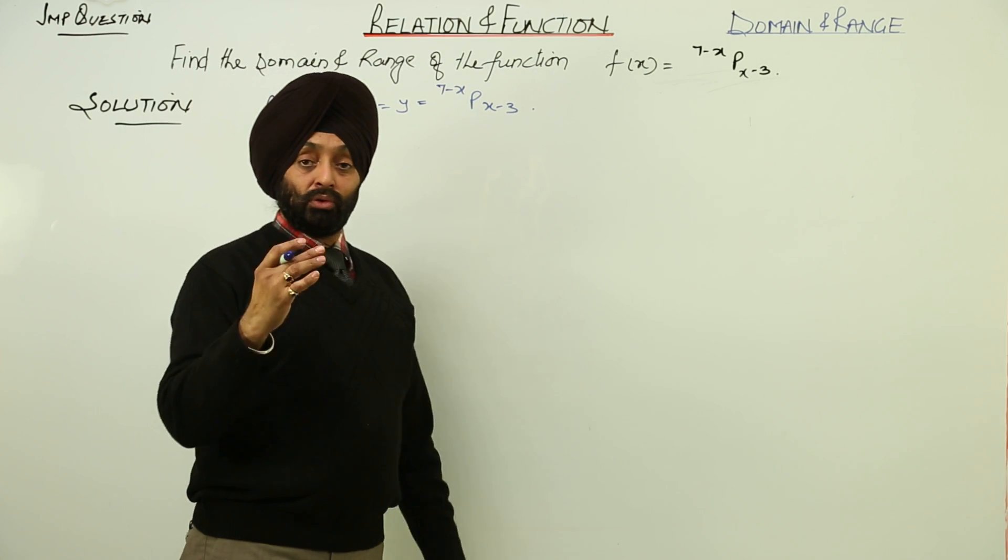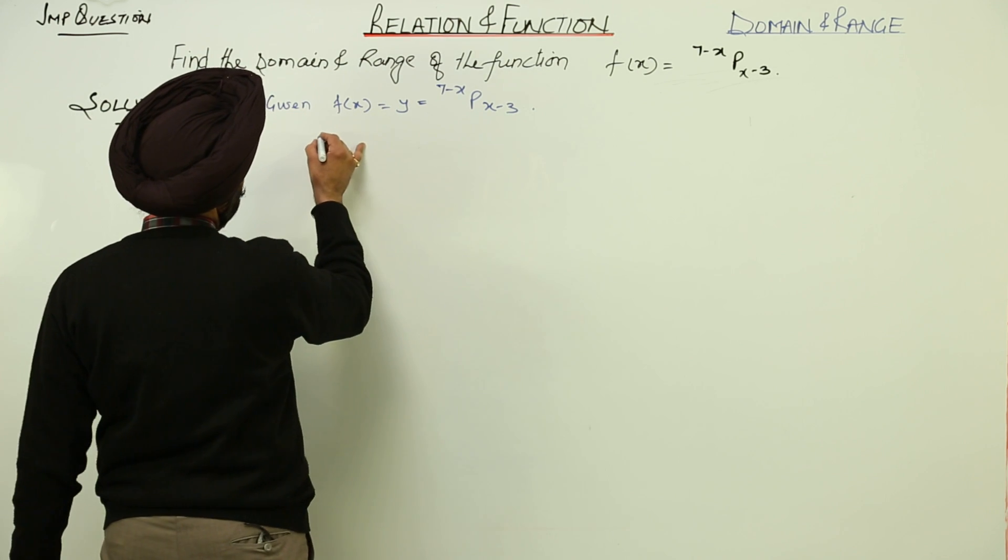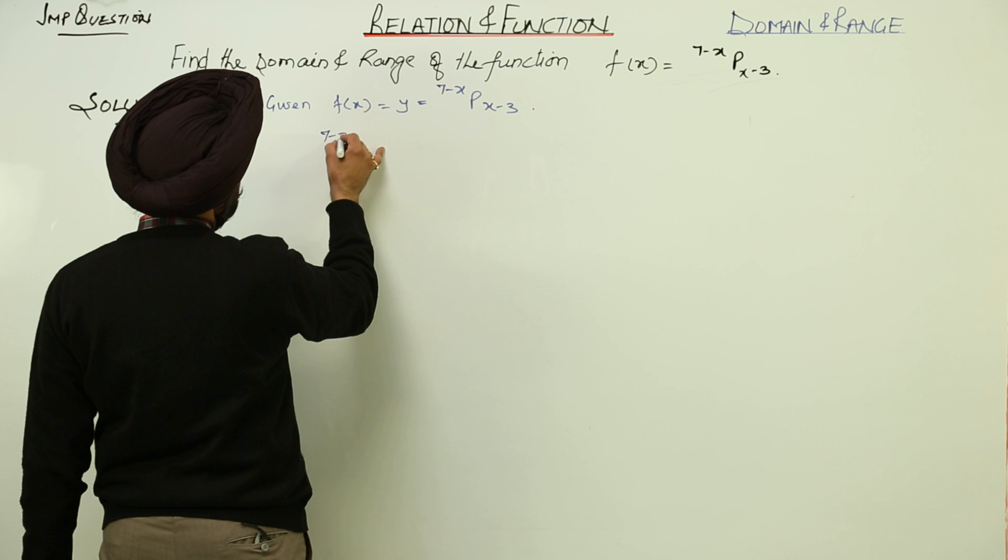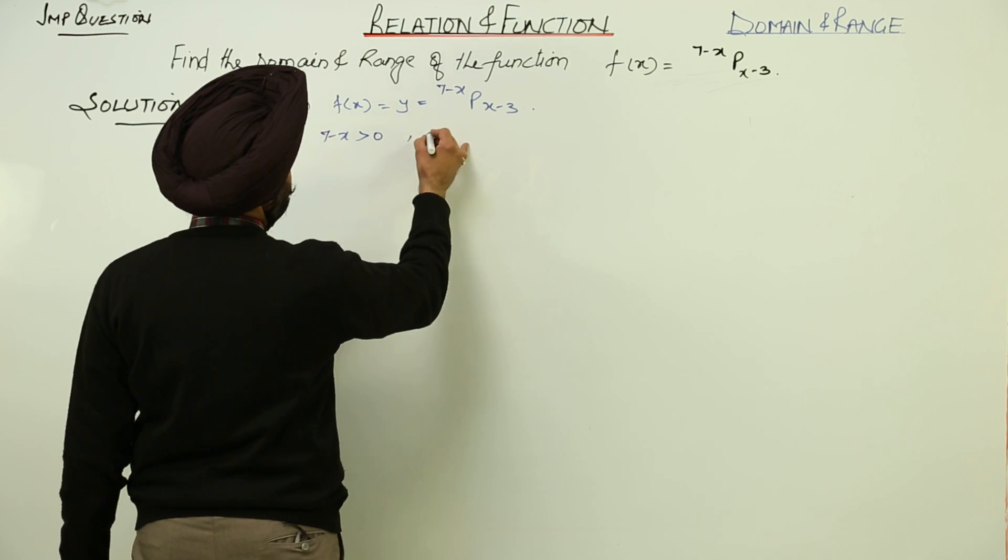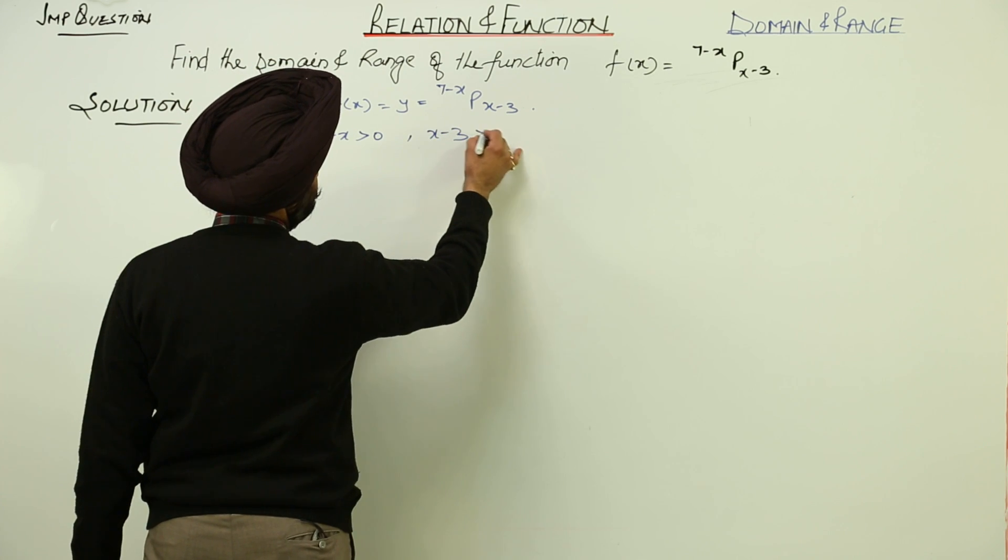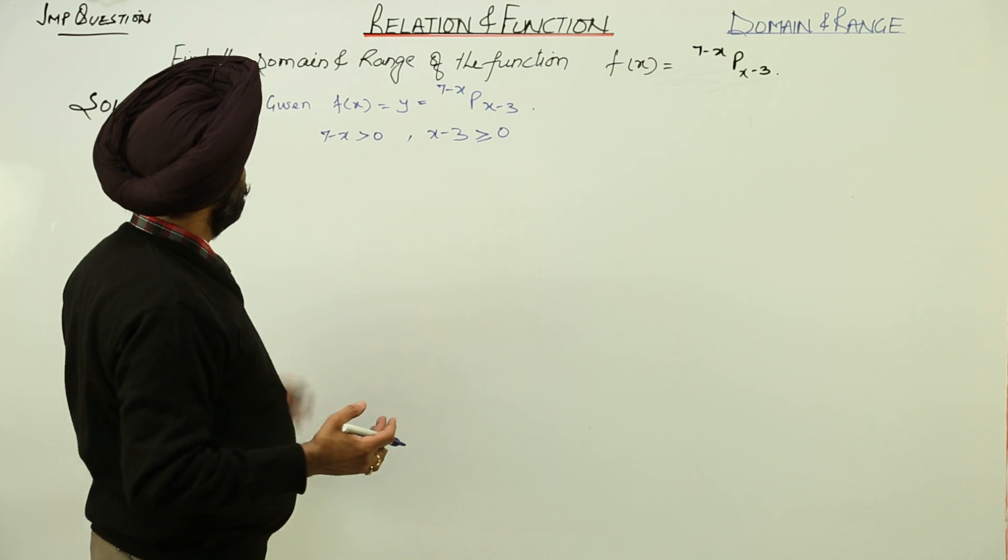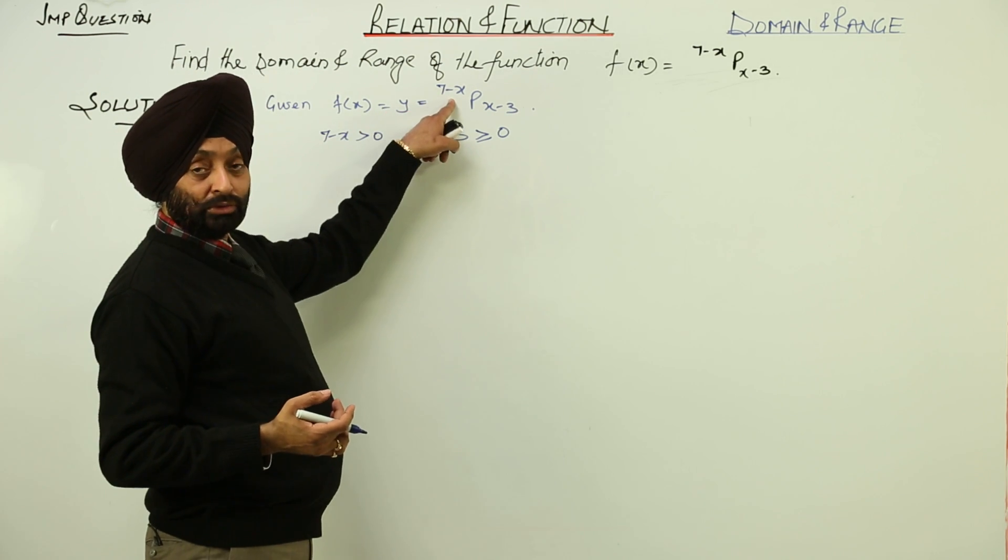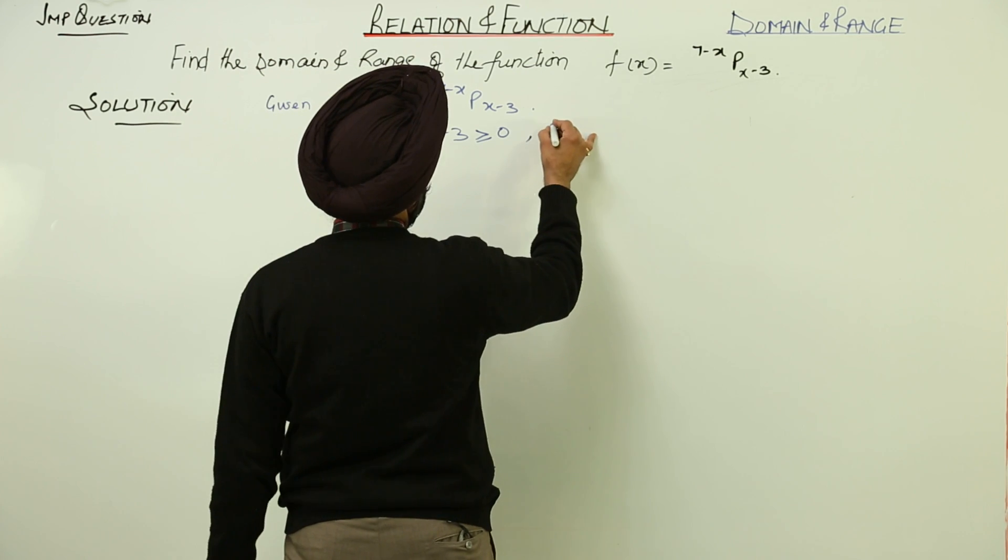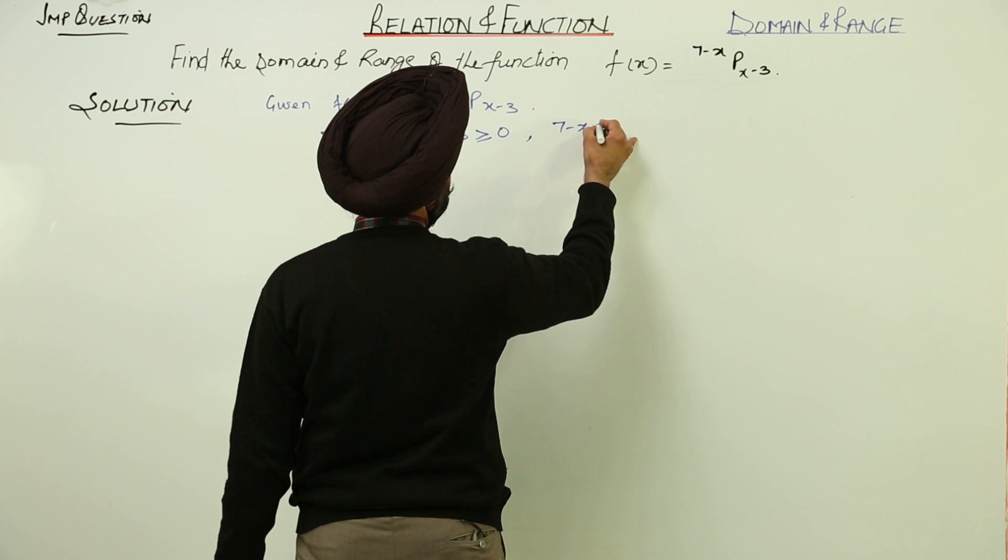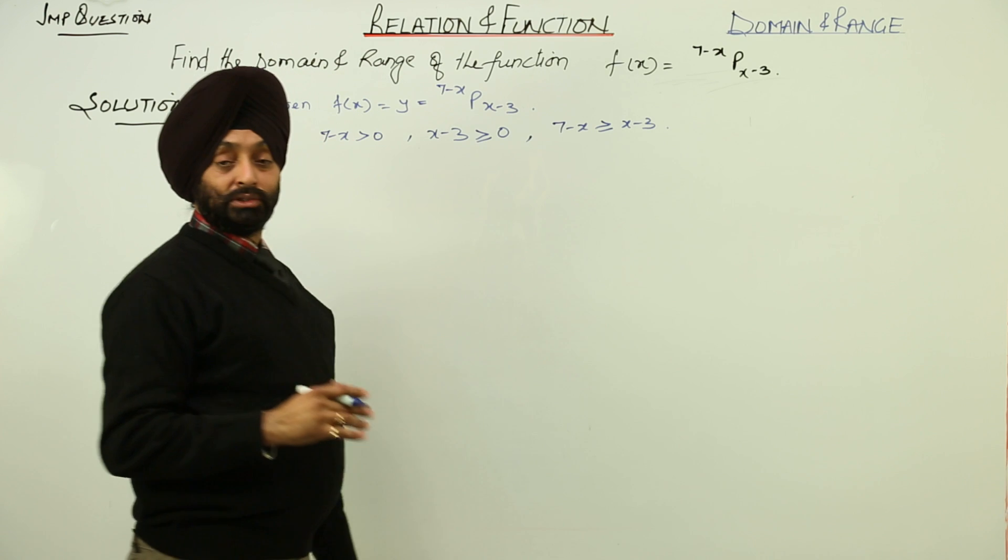We have to follow some properties for the permutation. We are having 7 minus x is always greater than 0. Then x minus 3 written in the base, it is always greater than or equal to 0. It can be 0 also, it can be greater than or equal to 0, but this cannot be 0. So this is always greater than 0 and always positive. And third condition, we are having 7 minus x is greater than or equal to x minus 3. So these are the 3 conditions which we have to follow.